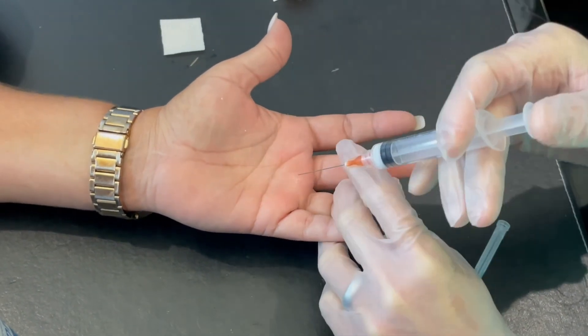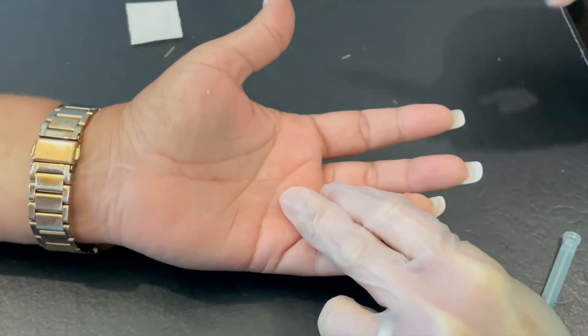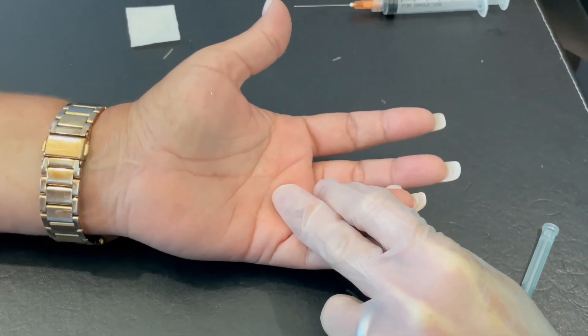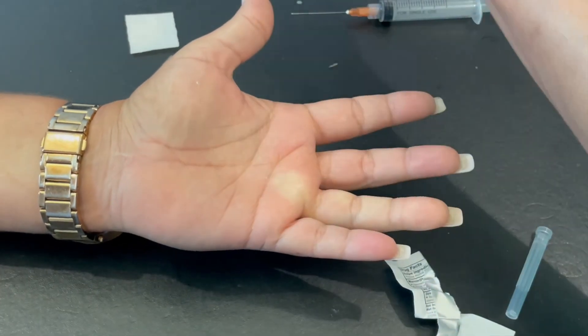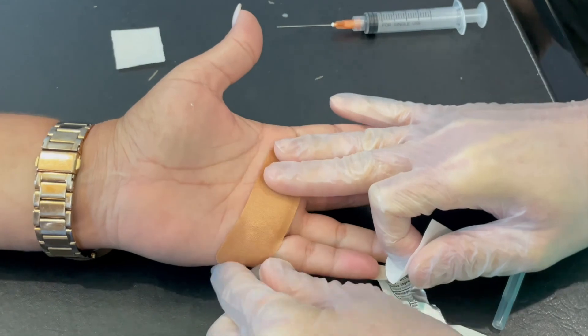We then inject 20 milligrams of Kenalog 40 milligrams per ml into the left ring finger using a 25-gauge needle. We place a band-aid to absorb any minor bleeding that might happen, and the patient is sent home at this point.